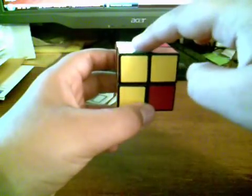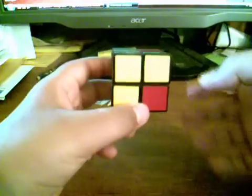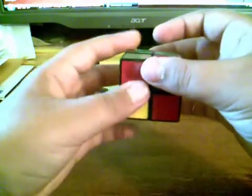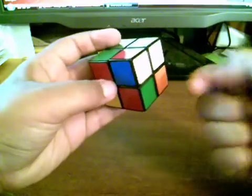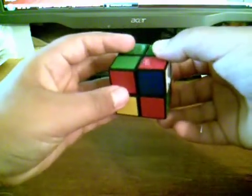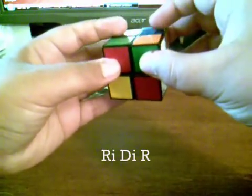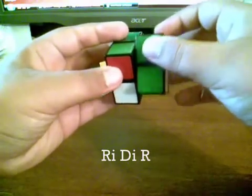Now note that even though there was a corner already in there, it does not affect how that algorithm works. And now, since it's facing this way, we do that different algorithm: R-I-D-I-R.